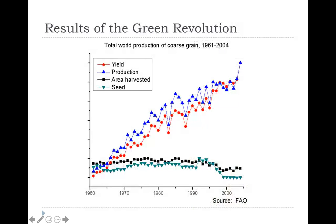Here are the results of the green revolution. The number of seed varieties has stayed pretty steady and actually decreased. The harvest area has stayed about the same — the area actually used for farmland — but the production and yield has increased exponentially from basically 1965 up to 2015. That's where we see these massive jumps in the production output of the green revolution.